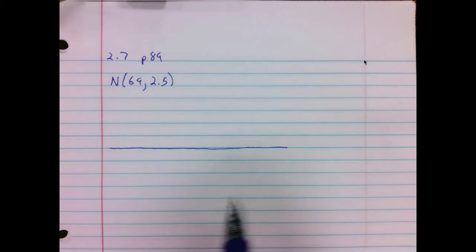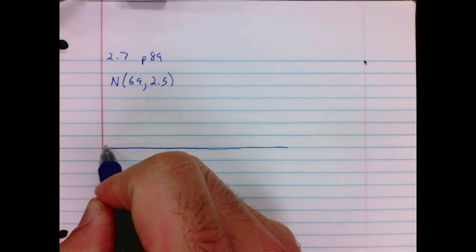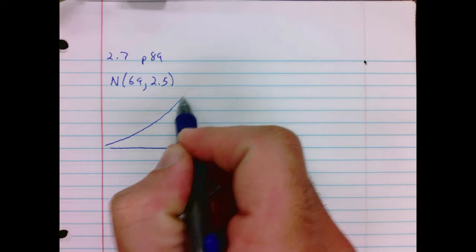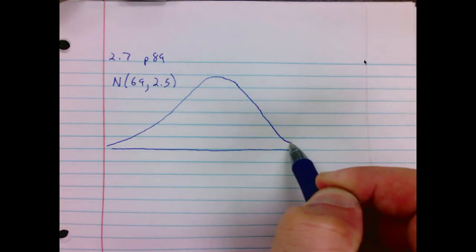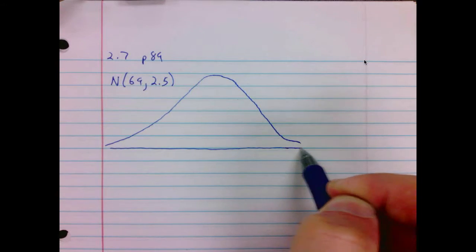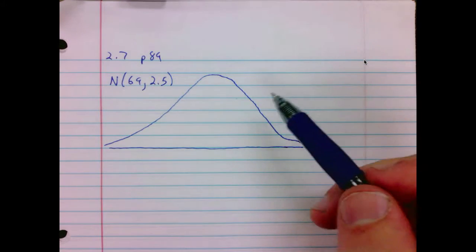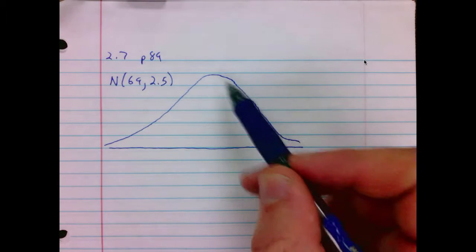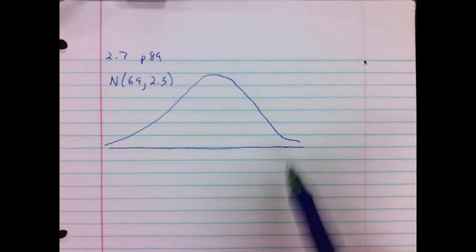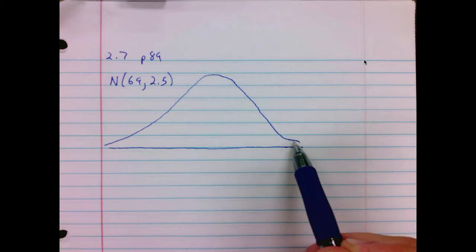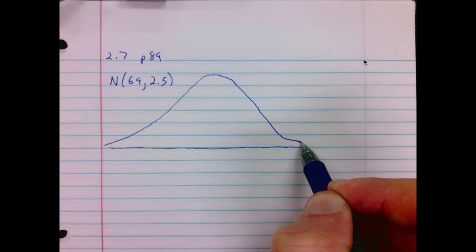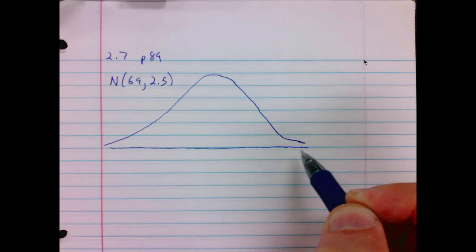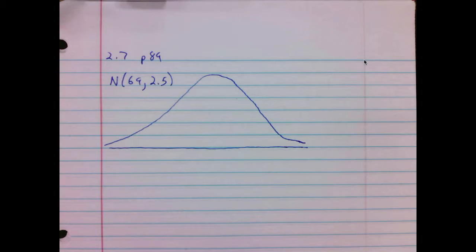You will get plenty of opportunities to fail at drawing these normal curves, so don't get so caught up in it being artwork. It needs to be mound-shaped, single-peaked. These lines here will approach the x-axis asymptotically, but I won't get it so close over here because we're going to be writing numbers out there.